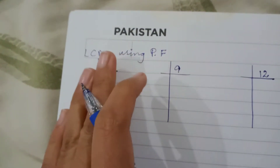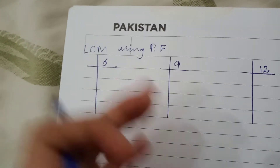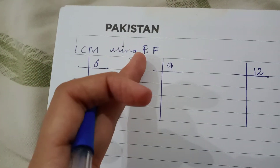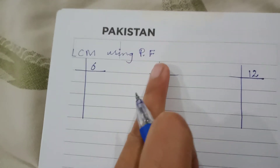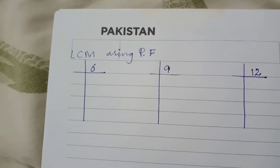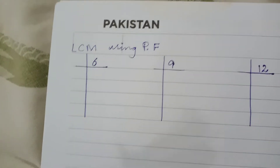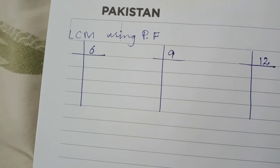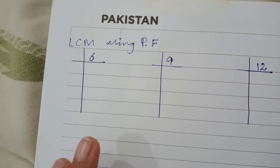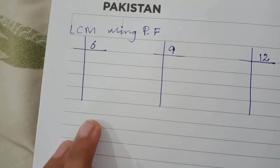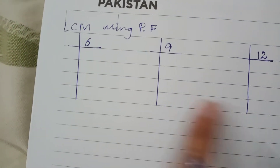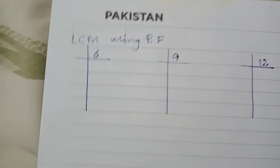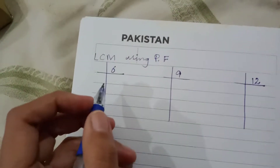We will use prime factorization to find out the LCM. Students, as you know, the first method is prime factorization and the second one is the division method. We have seen the division method a lot. Now we will solve LCM through prime factorization. Remember, for prime factorization you make separate tables for each number. So let's start.